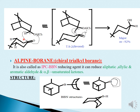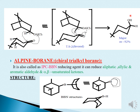Here you are taking tert-butyl cyclohexanone and treating it with the BoAlCl2 reagent. In the favored reaction, the attack takes place from this side, a transition state forms, and you result in the major product with an enantiomeric excess of 92%. The alcohol should be in the axial position in this favored case. Moving on to alpine borane.